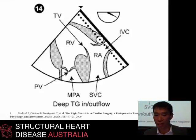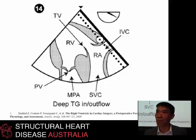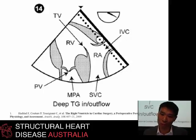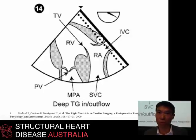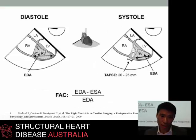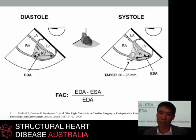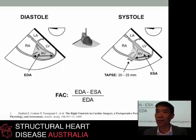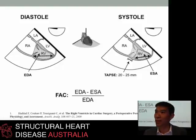Haddad and colleagues in their seminal paper in 2009 in Anesthesia and Analgesia imply that these measures can be obtained equally via TOE, via the deep transgastric RV inflow-outflow view, which is a surrogate for trying to obtain the true lateral annulus for S-prime pulse wave Doppler or TAPSE, although it was never really specifically implied in the text. Similarly, for calculating fractional area change and TAPSE, this was implied as being equivalent to a four-chamber view by TOE, and that measuring a single two-dimensional measurement from the lateral annulus to the apex between diastole and systole would be equivalent to a properly aligned M-mode cursor through the tricuspid annulus.